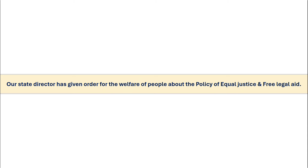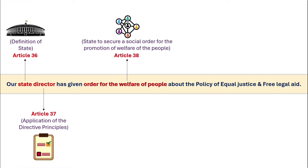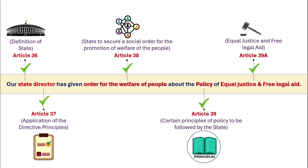Let's see how many articles this statement covers. 'State' comes from Article 36 — definition of state. 'Director' comes from Article 37 — application of the directive principles. The 'order for the welfare of people' comes from Article 38 — state to secure a social order for the promotion of welfare of the people. 'Policy' denotes Article 39 — certain principles of policy to be followed by the state. And 'equal justice and free legal aid' denotes Article 39A. In the first statement, we have covered five articles: 36, 37, 38, 39, and 39A.